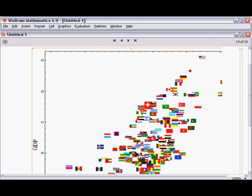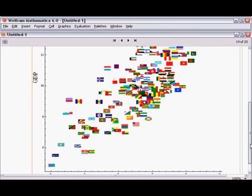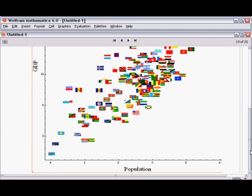And then customising it with details such as flags of the countries that are represented in this plot of population versus GDP. And also programming details such as tooltips, where we get to see the country shape and name as a tooltip for each flag.